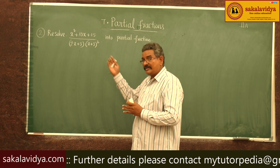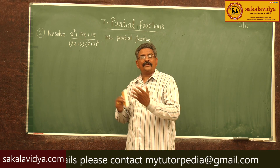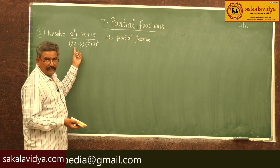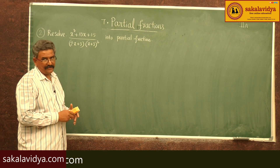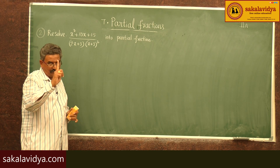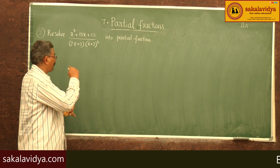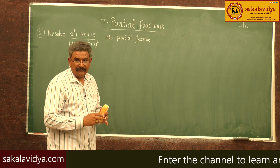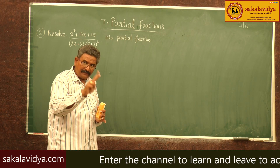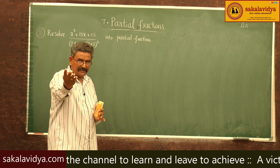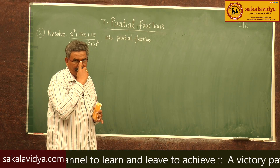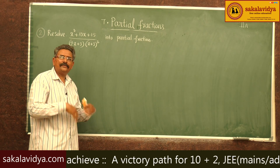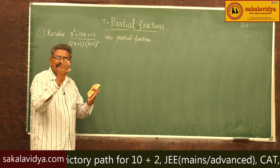What partial fractions can exist for this problem? For the non-repeated linear factor (2x + 3), there exists one term: A/(2x + 3). For (x + 3)², there exist two terms: B/(x + 3) and C/(x + 3)². So we have to find three values: A, B, and C.